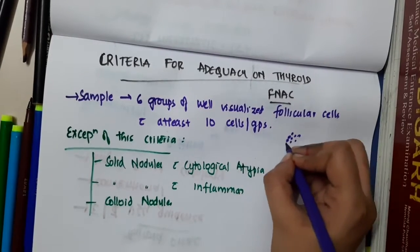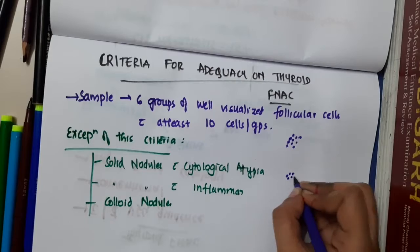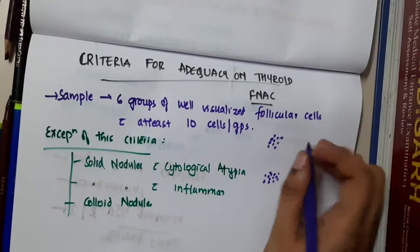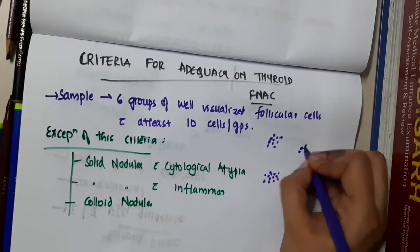So how do you see this? This is one group with more than 10 cells, this is another group with more than 10 cells. So this is how you see it in microscopy.